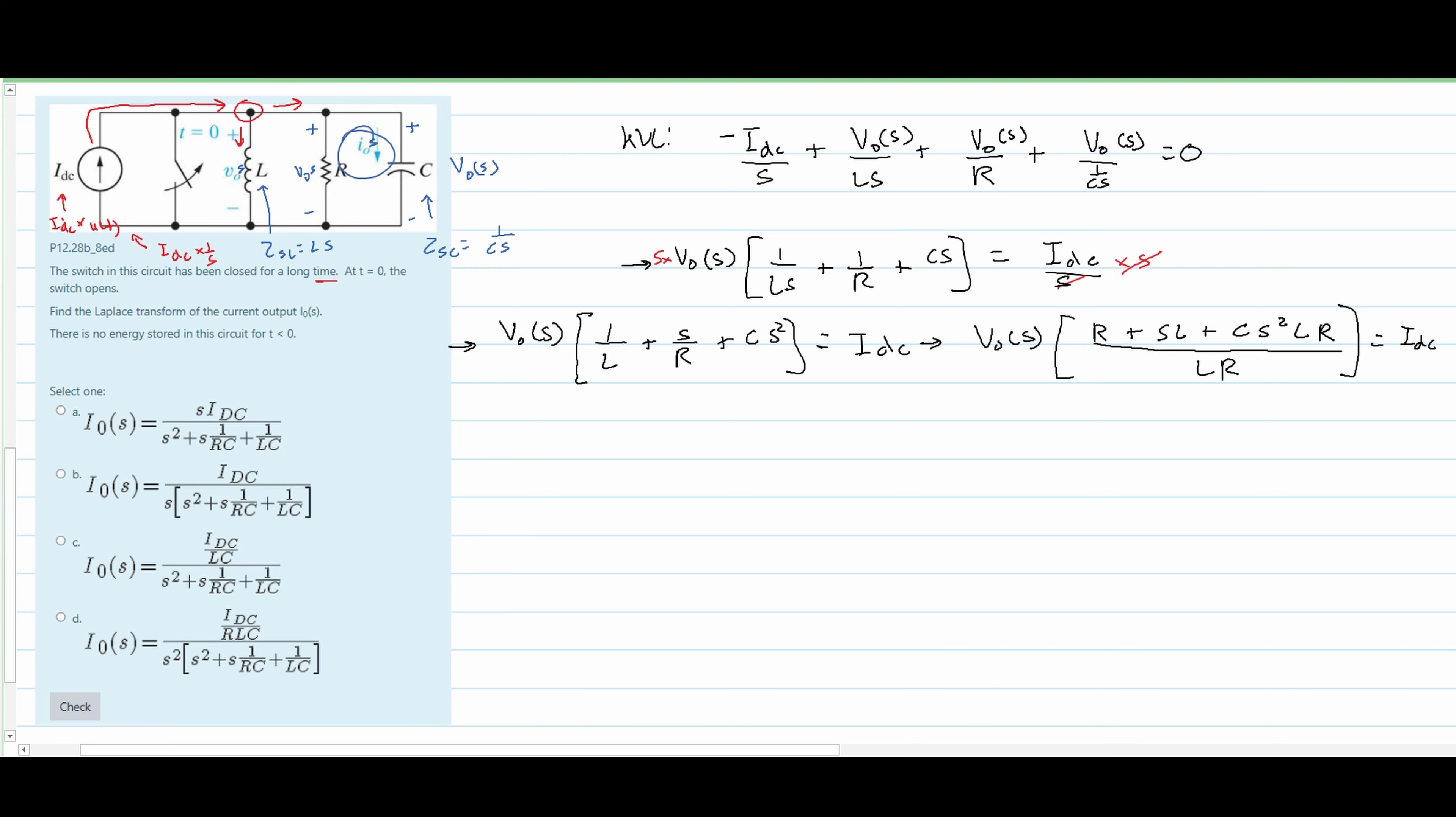We want to find our I0(s), so we'll find that I0(s) is equal to our V0(s) divided by the impedance of capacitance, which is 1 over sC. So we can rewrite this. I0(s) is equal to V0(s) times sC if we flip this on top.